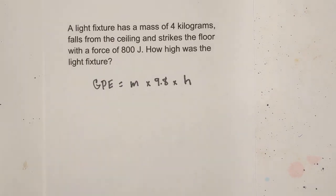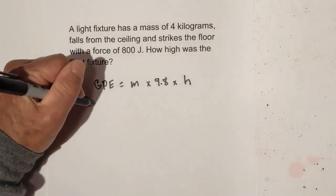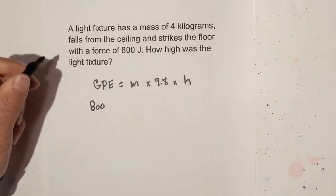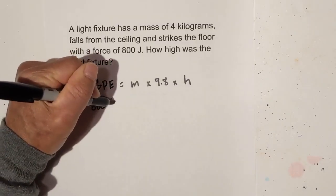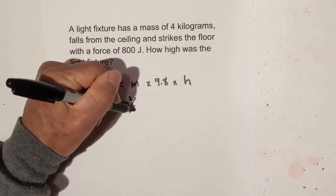We're going to use GPE equals mass times the gravity constant, which is 9.8 times the height. Let's start plugging in numbers. We know what the GPE is, and that is 800 joules. I'm going to rewrite the joules as kilograms times meters squared per second squared.